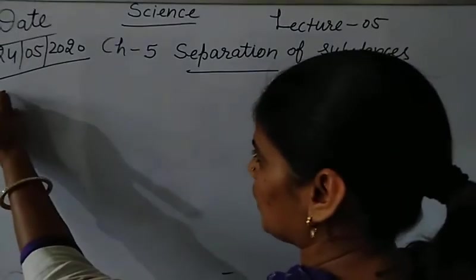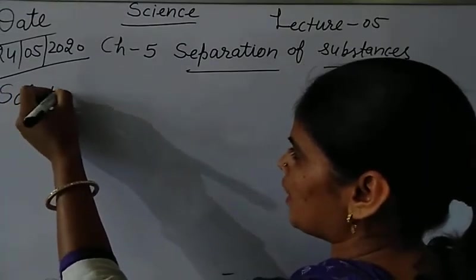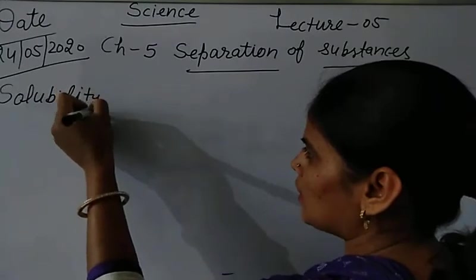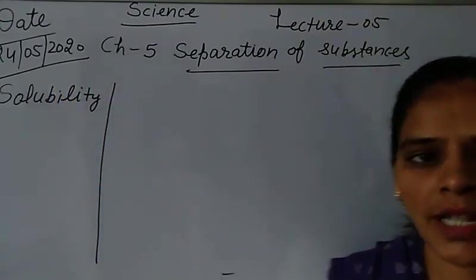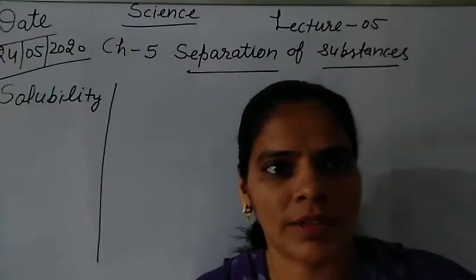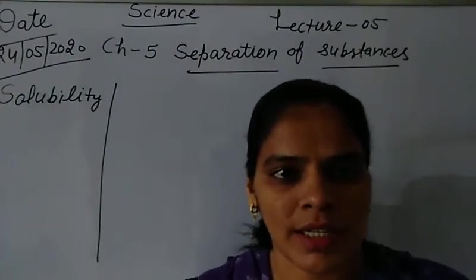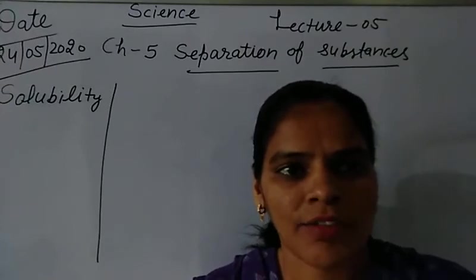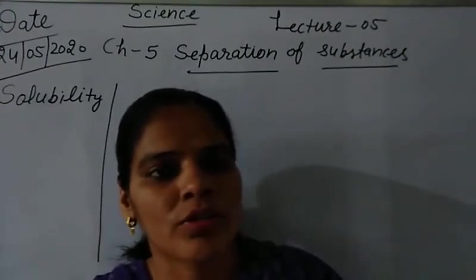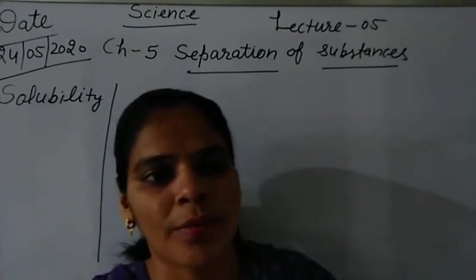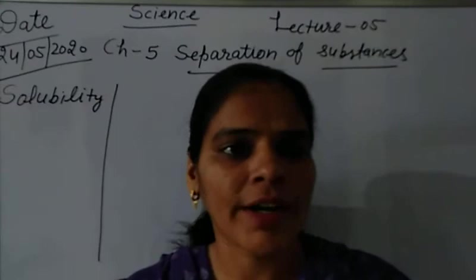First, Solubility. In the previous lecture, we discussed the methods of distillation — simple distillation and fractional distillation. In fractional distillation, we have two miscible liquids. How do we separate them? For example, we used water and alcohol.